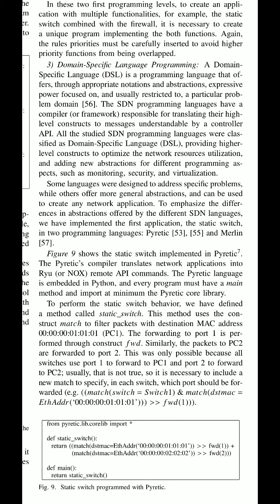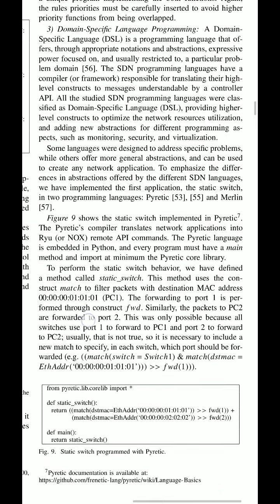The SDN programming languages have a compiler or framework responsible for translating their higher level constructs to messages understandable by a controller API. All the studied SDN programming languages are classified as domain specific languages, providing higher level constructs to optimize network resource utilization and adding new abstractions for different programming aspects such as monitoring, security and virtualization. To emphasize the differences in abstraction, we have implemented the static switch in two programming languages: Pyretic and Merlin.